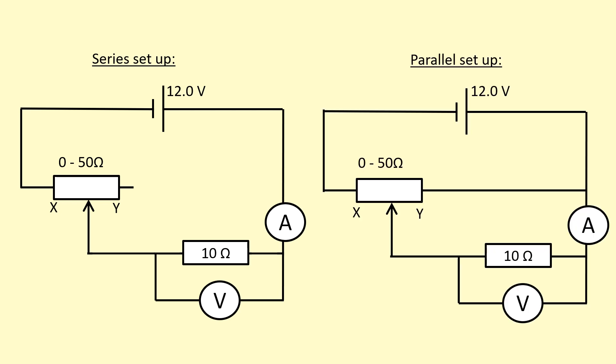This setup is much better. It's a parallel setup where we're using all three terminals of the rheostat. This will allow us to change the voltage across the 10-ohm resistor all the way from zero to the 12-volt maximum. The series setup won't allow us to measure the whole IV characteristics.